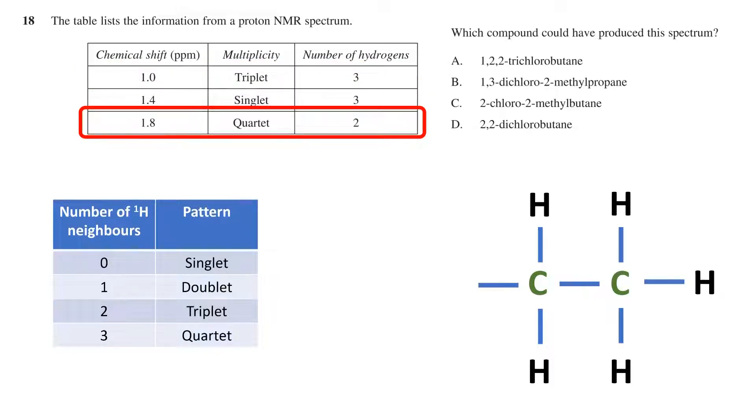and this signal has a chemical shift of 1.8 parts per million and is a quartet. This works well with our previous hydrogen environment, as the quartet implies we have three neighboring hydrogens. This is exactly what we had on the first carbon we drew.